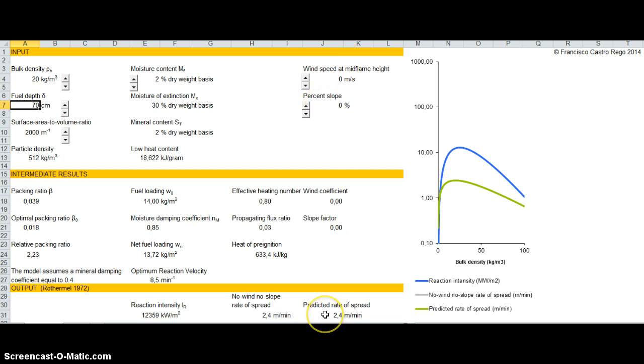So to start with, you can look at the effect of bulk density. Bulk density is a very important characteristic of the fuel. Here you see how reaction intensity and rate of spread are changed with different values of bulk density. For very low values of bulk density, you have not enough fuel to really develop a very fast fire and a very intense fire.